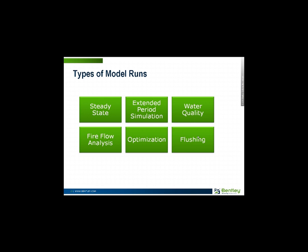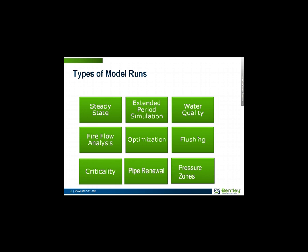We can analyze flushing of water distribution systems to clean out pipes and improve quality. We can look at criticality, looking at what happens when individual elements or combinations of elements fail in the system and how the system behaves in those cases. We can look at pipe renewal, combining results like criticality and capacity during fire flows with pipe maintenance history to identify critical links in the system. And we can do things like identifying pressure zones, seeing how the system is broken up into pressure zones and maybe how it should be broken up into the pressure zones.